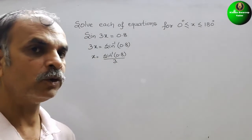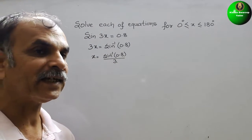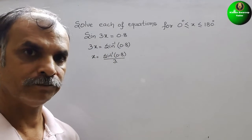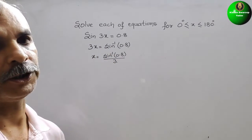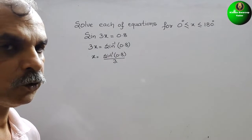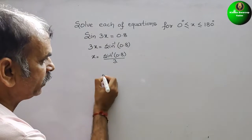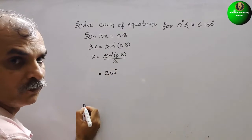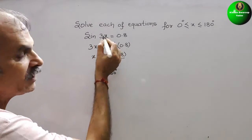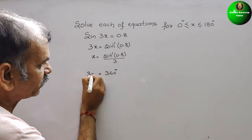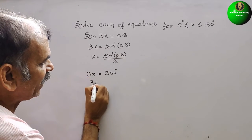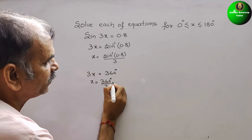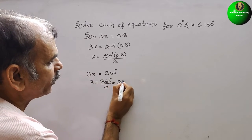We have to understand that the sine cycle is 360 degrees. Here they have given 3x, so we can say x = 360° ÷ 3, which is equal to 120 degrees. So now we have to complete our cycle in 120 degrees.